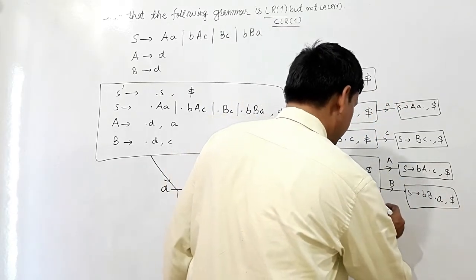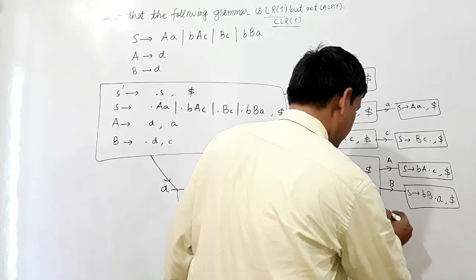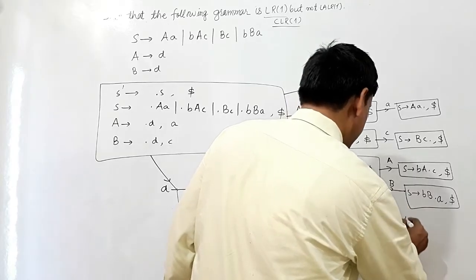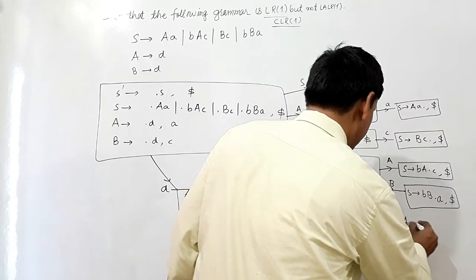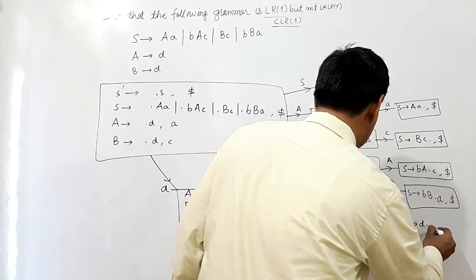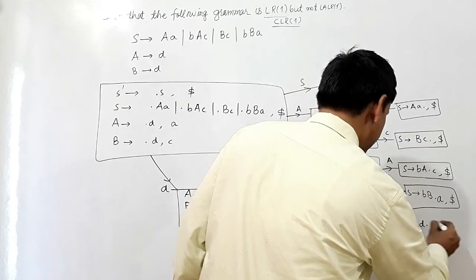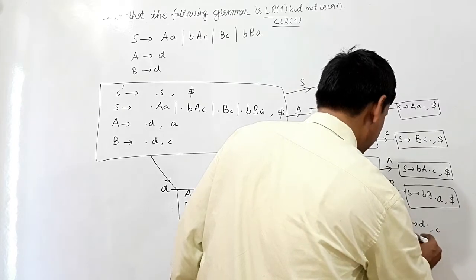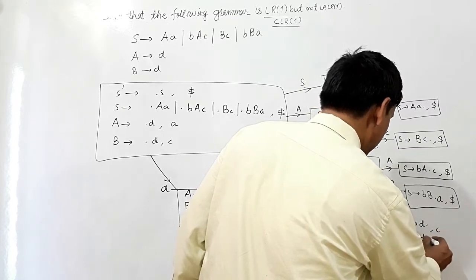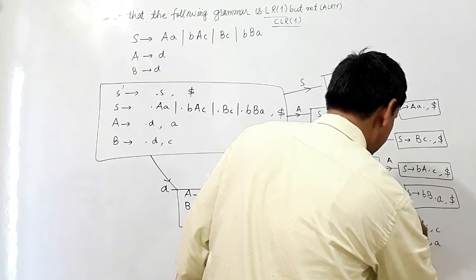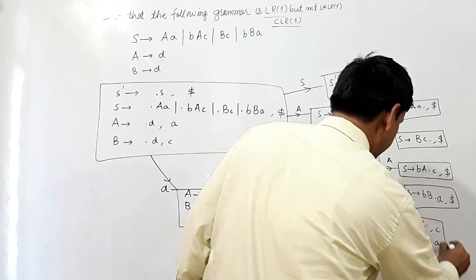If I read D here, A will give me D dot, with lookahead C and D. D will give me D dot, with lookahead small A.